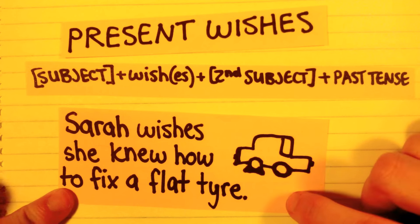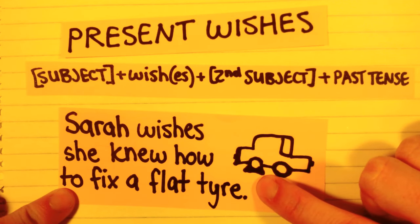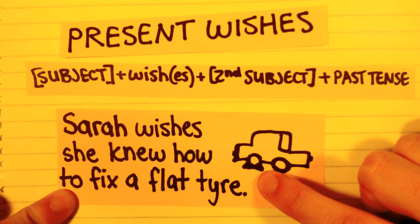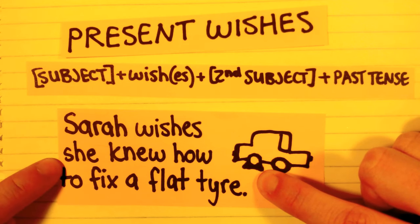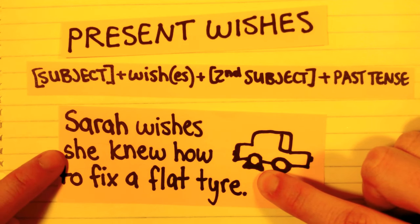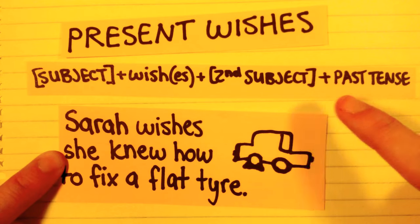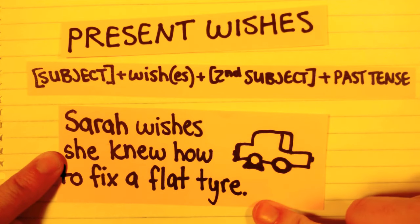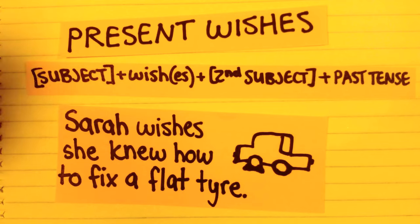Or: 'Sarah wishes she knew how to fix a flat tire.' Sarah's tire is flat and she does not know how to fix it. She wishes she knew how to fix a flat tire — 'knew' is in the past tense, and she wishes she knew that right now.